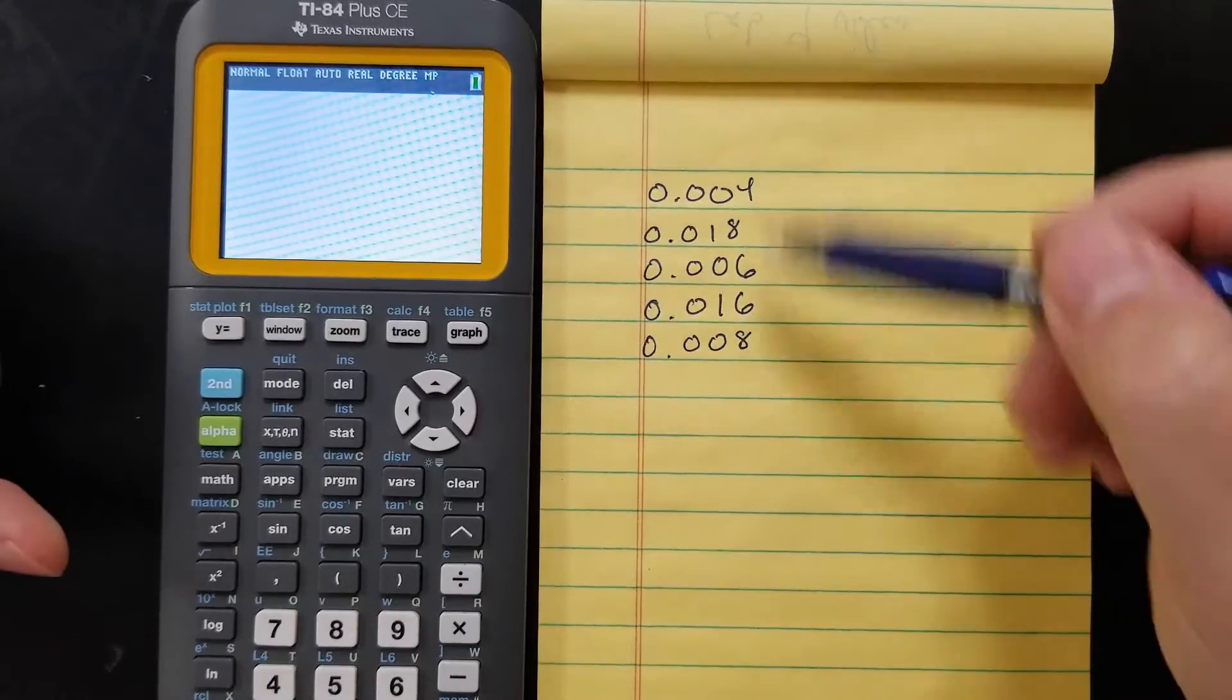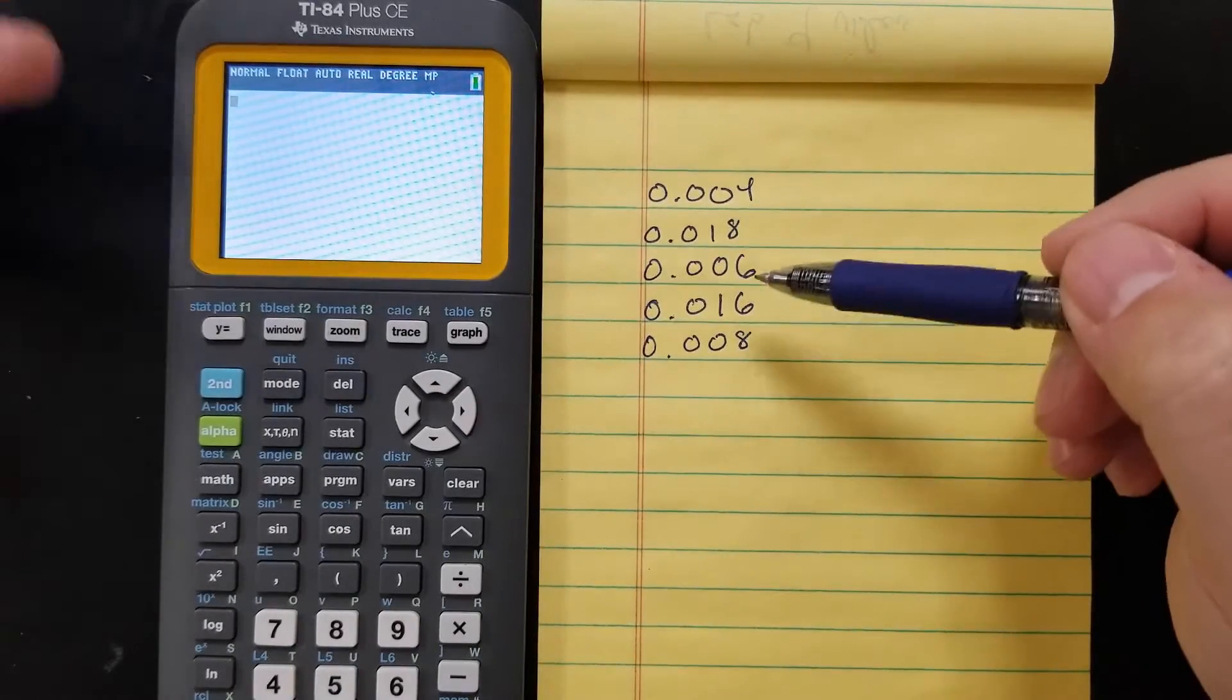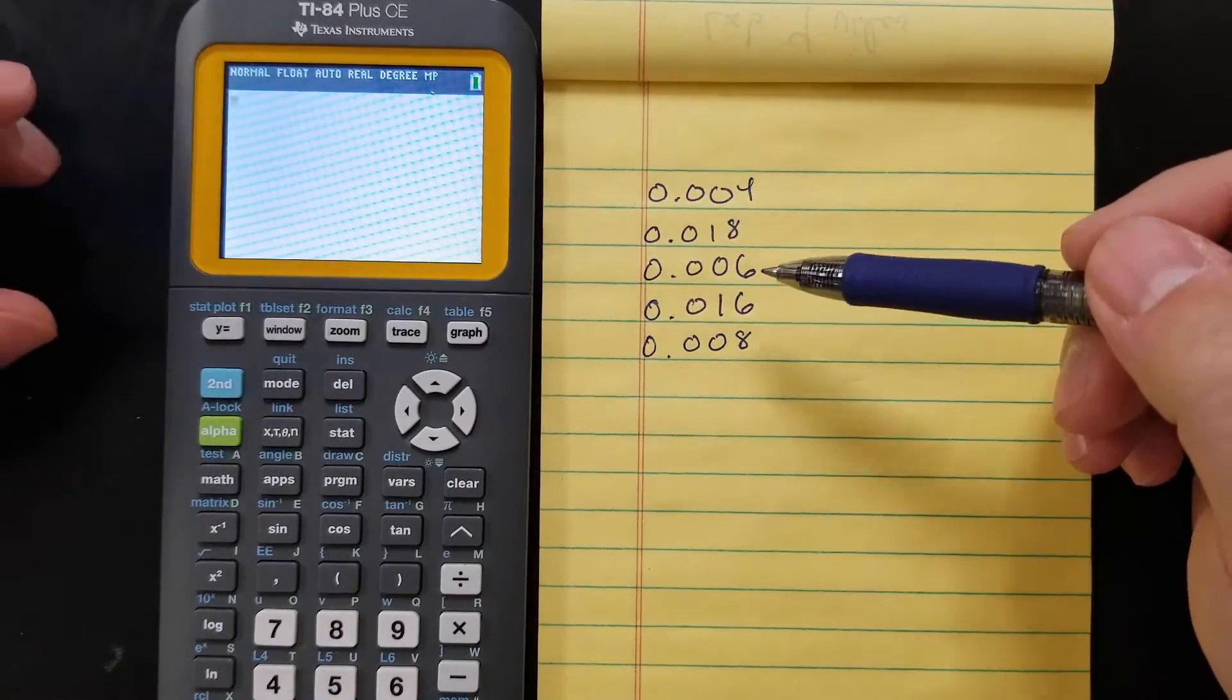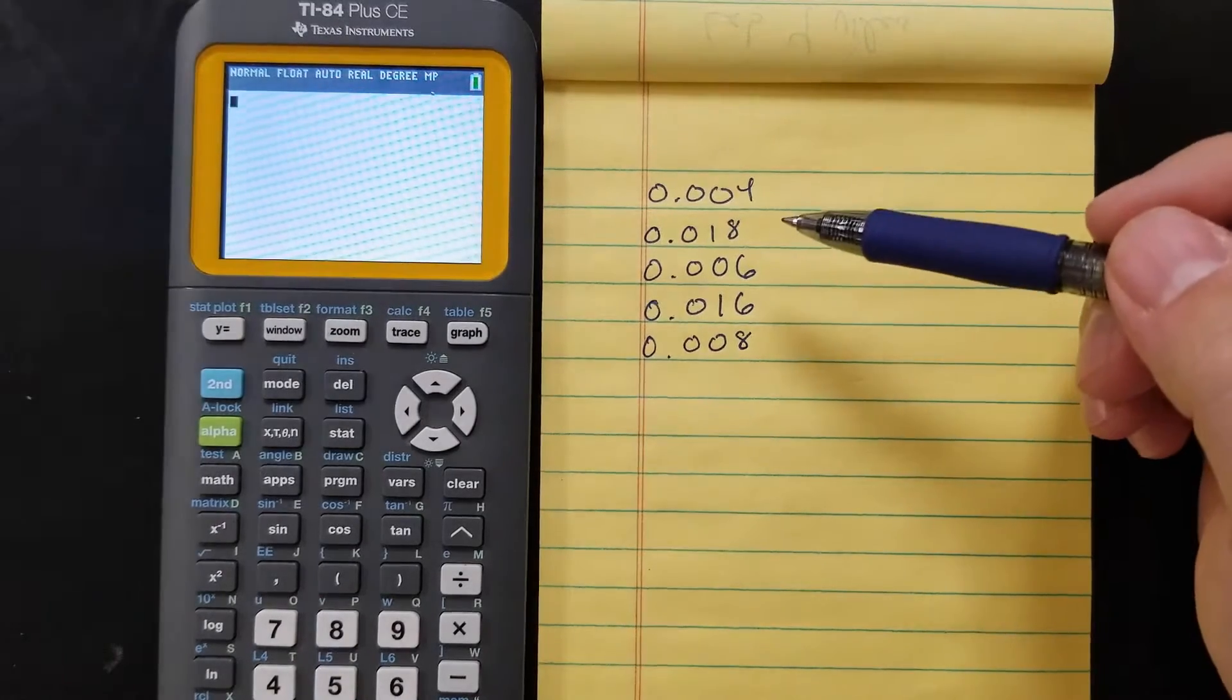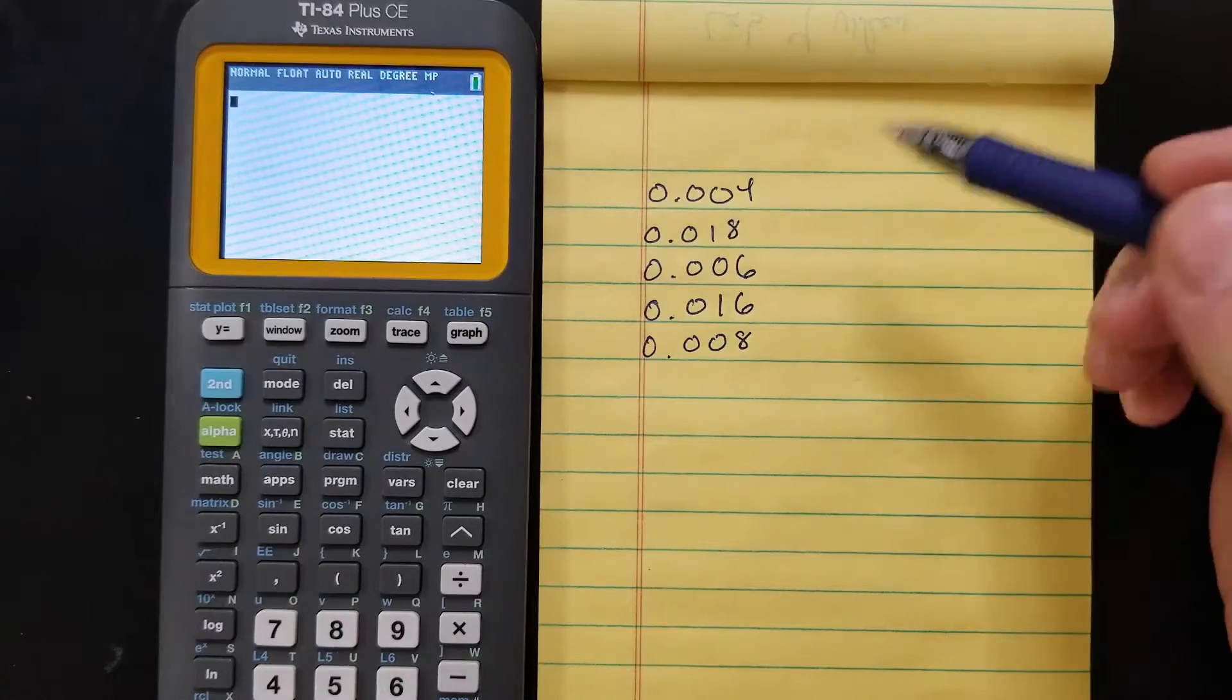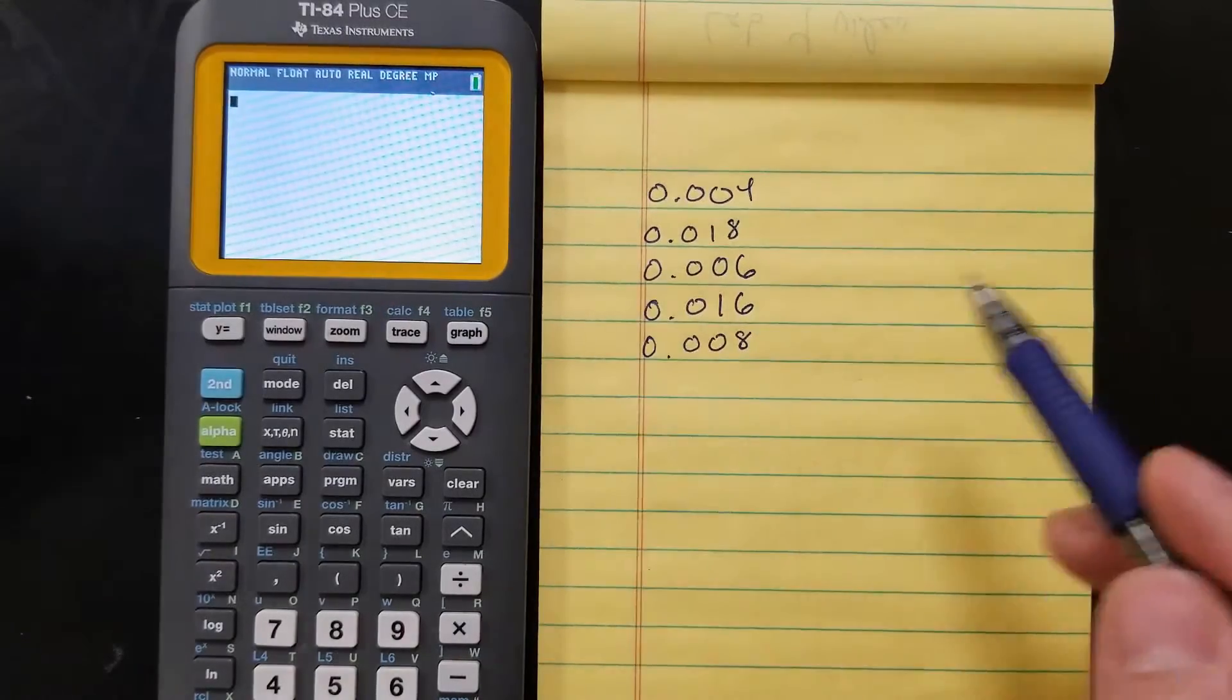I have some numbers—these are five energy differences from a lab that I did. I want to see if zero falls within the range, so I'm trying to find a confidence interval for these numbers.